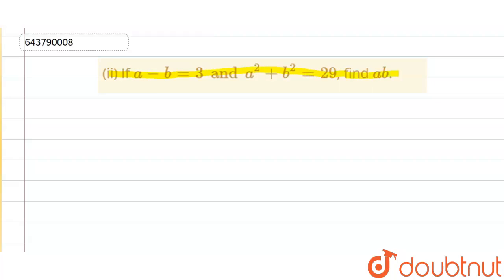So we know the identity that a minus b whole square is equals to a square plus b square minus 2ab.